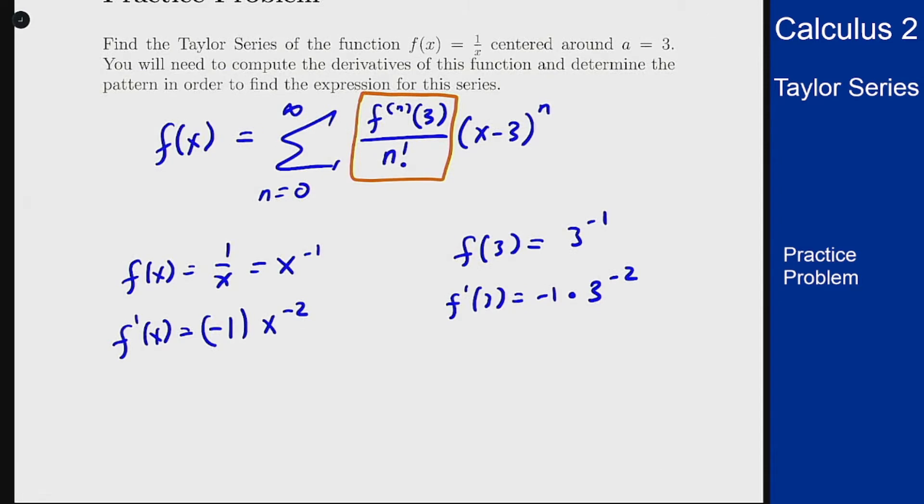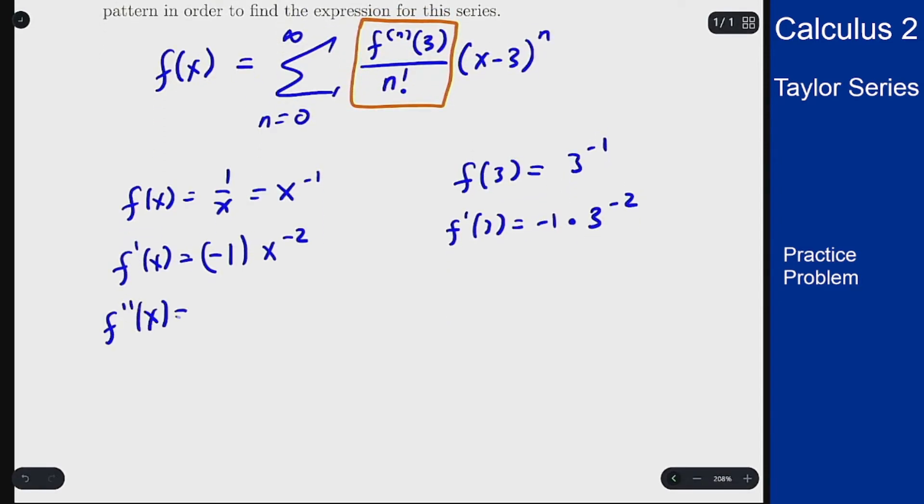We want to keep going to find a pattern here. f double prime will be negative 2 times negative 1 times x to the minus 3 or just 2 times 1 times x to the minus 3. f double prime at 3 is then 2 times 3 to the minus third. We'll do one more to find the pattern here.